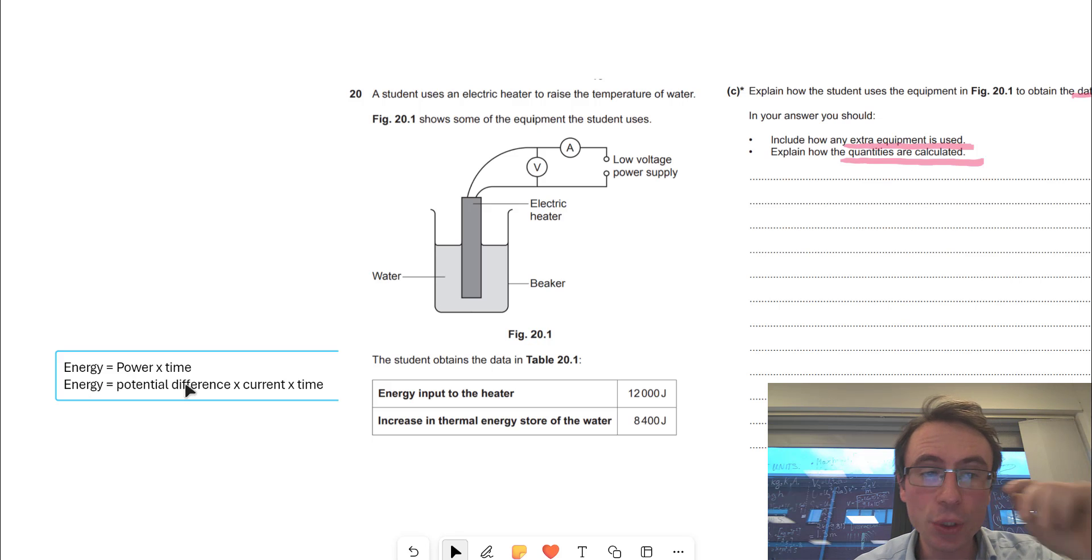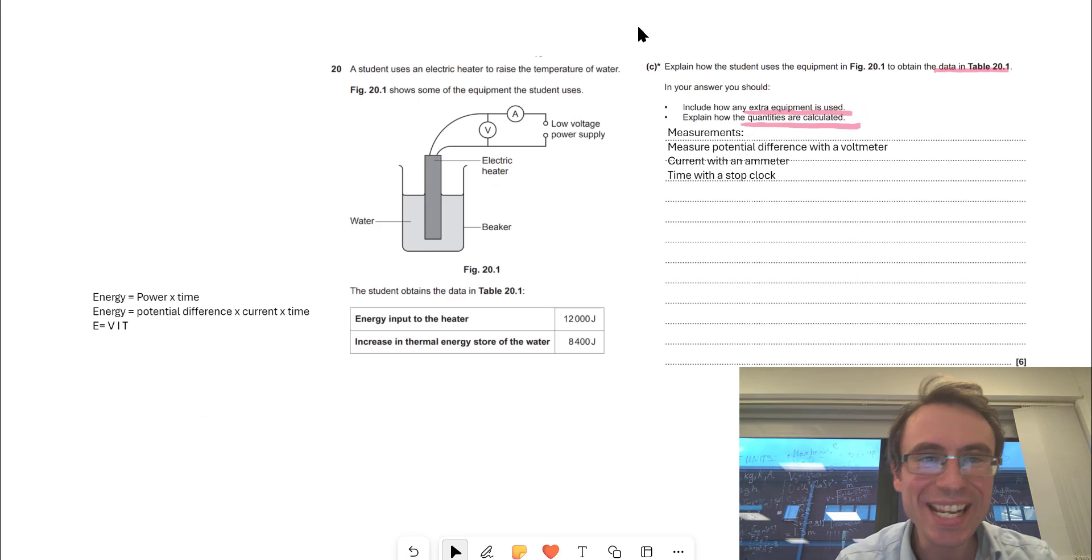So energy is power times time, but electrical power is just potential difference times current. And this directly links to our first set of marks that we're going to get for our measurements.